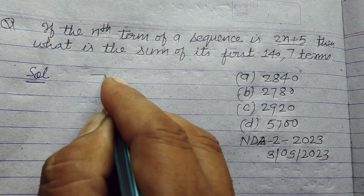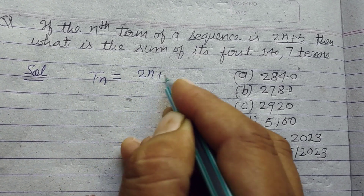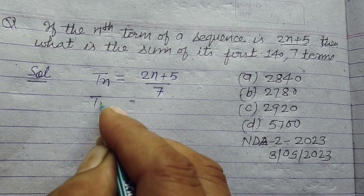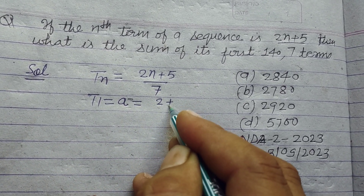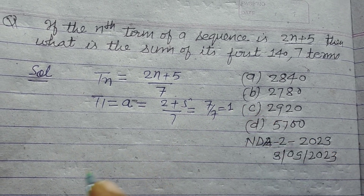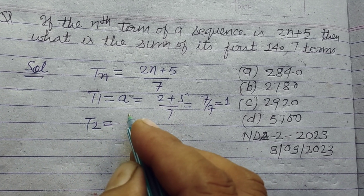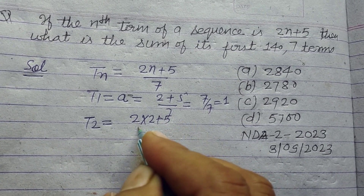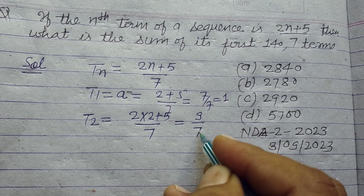So students, here the nth term tn is given to us as (2n + 5) / 7. So its first term t1, which is known as a, is (2 + 5) / 7 = 7/7 = 1. And t2 is equal to (2×2 + 5) / 7 = (4 + 5) / 7 = 9/7.